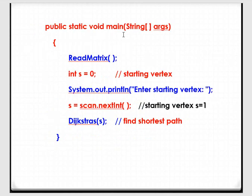When it comes to void main, first we are going to call a readMatrix function where we are going to read the value of N and also the cost matrix. Dijkstra's algorithm is used to calculate the shortest path from one vertex to all other vertices. In order to do that, first we need to choose a starting vertex — that is the source vertex, indicated with the variable S.